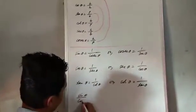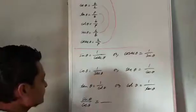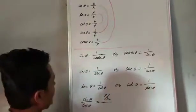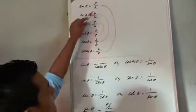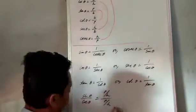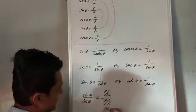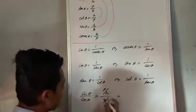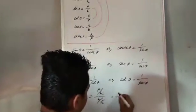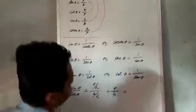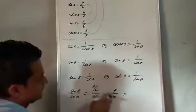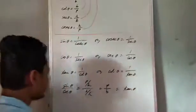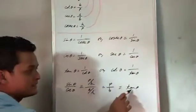sin θ divided by cos θ: the formula for sin θ is P by H and for cos θ is B by H. Here, the hypotenuse and hypotenuse will cancel out. What will remain? P by B. Which trigonometric ratio has P by B? That is tan θ. So sin θ divided by cos θ equals tan θ.